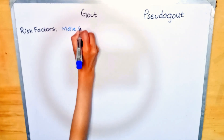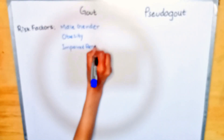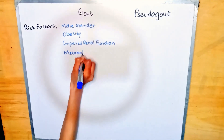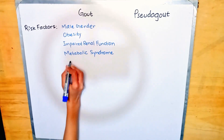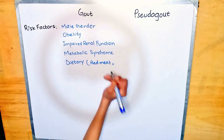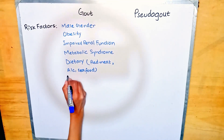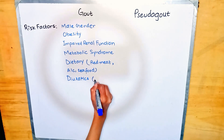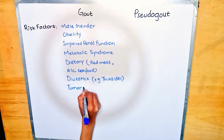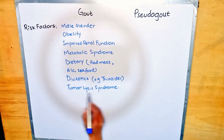Risk factors for gout include male gender, obesity, impaired renal function — since decreased uric acid excretion contributes to gout — metabolic syndrome, and diet such as red meat, alcohol, or seafood. Diuretics, for example thiazides, can also cause gout. It can also be due to tumor lysis syndrome, where chemotherapeutic agents cause cell lysis and the nucleic acids of those cells are broken down to form uric acid.